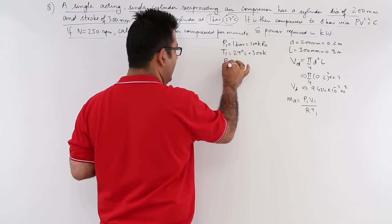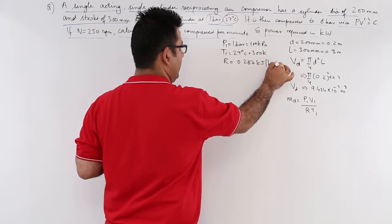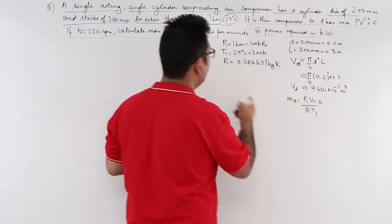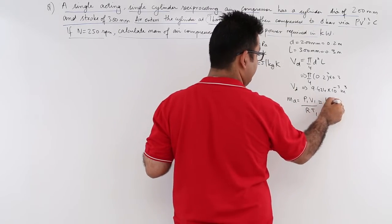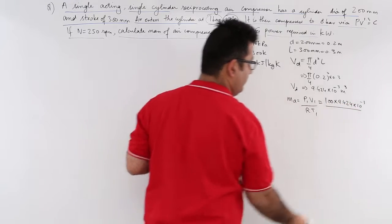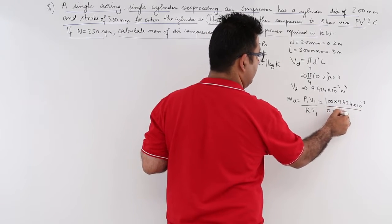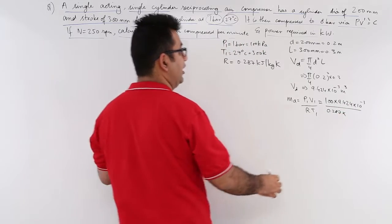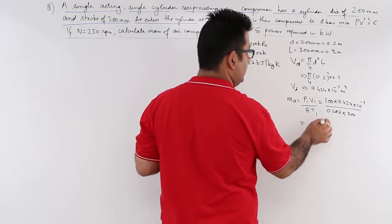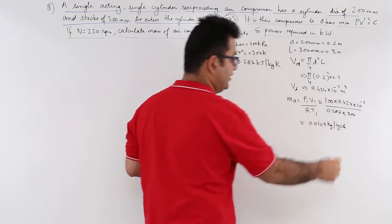300 Kelvin and R for air is 0.287 kilojoule per kg Kelvin. So putting in these values, you will have 100 kPa into 9.424 into 10 to the power minus 3 divided by 0.287 into T1 which is 300. So mass of air is 0.0109 kg per cycle.